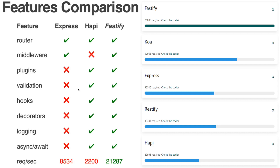Looking at the benchmarks, Fastify does 21,000 requests compared to Express. The benchmark on the right is a very simple GET request returning 'Hello World', so it's a very lean server — not doing much. But as you can see, Fastify is doing 76,000 requests per second, which is really impressive for a single entry point. Koa follows right after Express, then Restify, then Hapi.